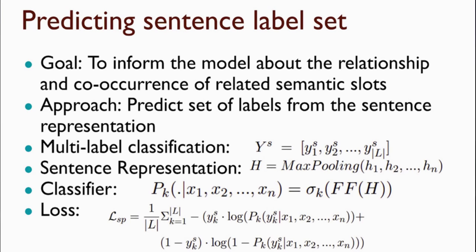The third subtask is to predict the set of semantic slots existing in the given sentence. The goal is to make sure the model is aware of related semantic slots that usually co-occur. We predict the set of labels from sentence representations in a multi-label classification setting, outputting a vector of zeros and ones where the size equals the total number of semantic slots in the dataset. To generate sentence representations, we use max pooling over all words, then a feed-forward neural network with sigmoid activation predicts the existence of different semantic slots. Binary cross-entropy averaged over all labels is used as the loss.